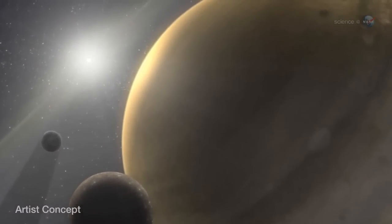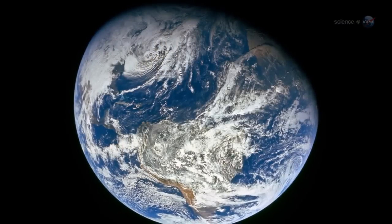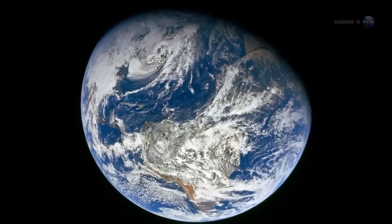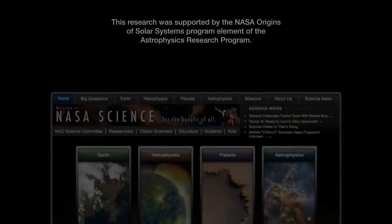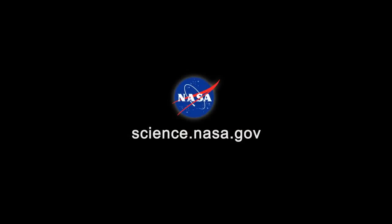One day, he says, our own solar system may end up the same way. In five billion years, the fried planet could be Earth. Until then, for breaking science news, stay tuned to science.nasa.gov.